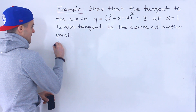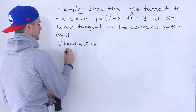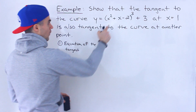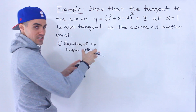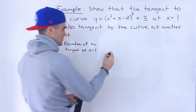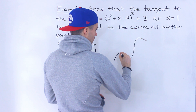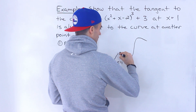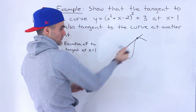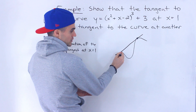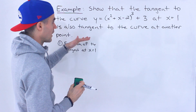The first step is I'm going to find the equation of the tangent for this function at an x value of 1, because we're trying to show that this tangent is also going to be tangent to another point on the function. For example, let's say the function looks like that — we have to show that at this x value of 1, the tangent is also going to be tangent to another point on the same function.